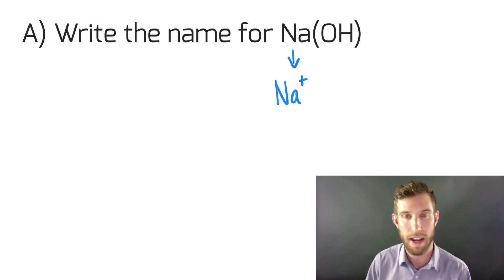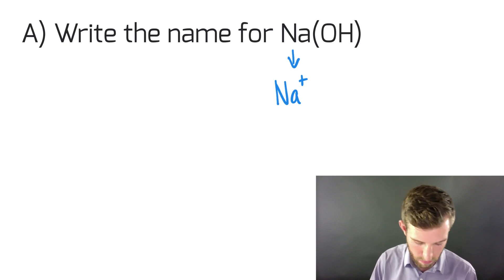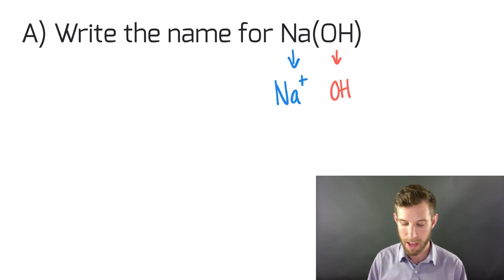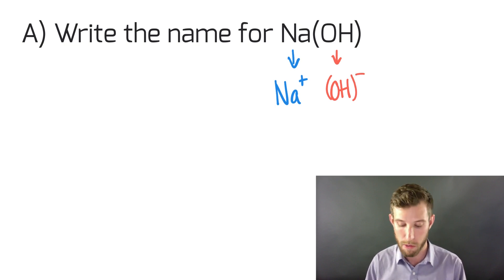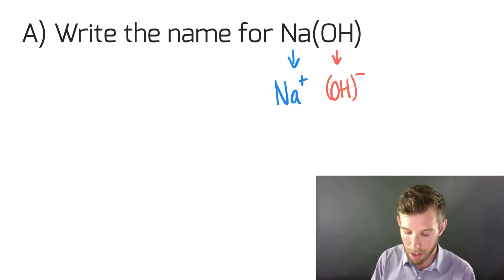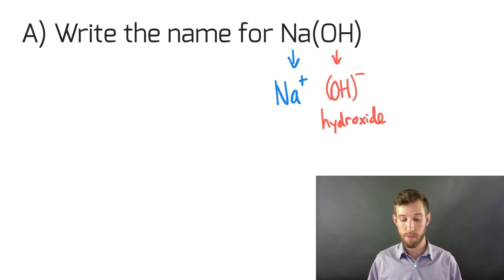I can look at my anion here and I say this is OH. What do I know about OH? I know that it's two atoms that are acting together as one. It comes from a list that we know. It's on the list of our polyatomic ions list, which for my class is on the back of their periodic table. I know that it has a one minus charge. The fancy name for it is the hydroxide ion.